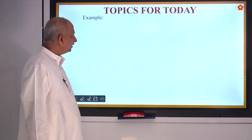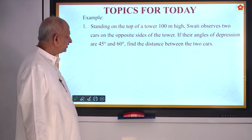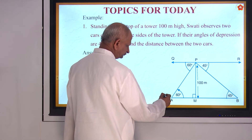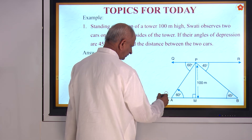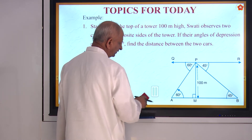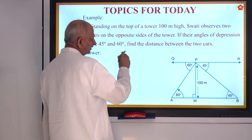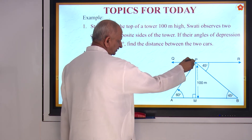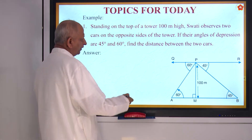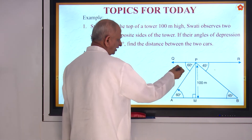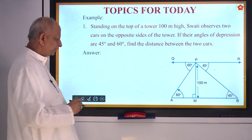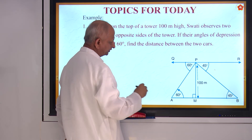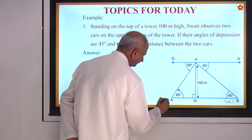Coming to the topics of today — some more interesting questions. Swati is standing on the top of a tower 100 meters high and observes two cars. She looks at the cars and this is the horizontal. One car she looks at an angle of depression of 45 degrees, another car at 60 degrees in the opposite direction. The question is: what is the distance between the two cars?